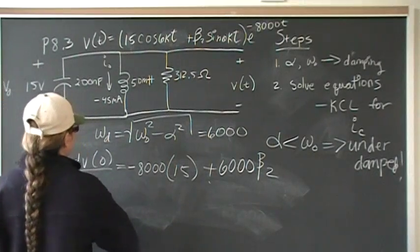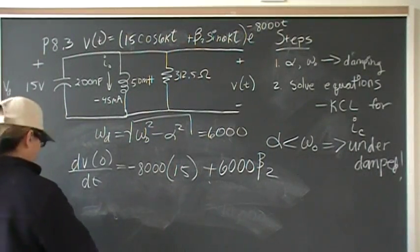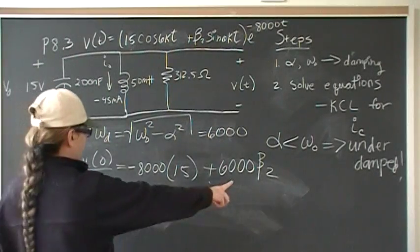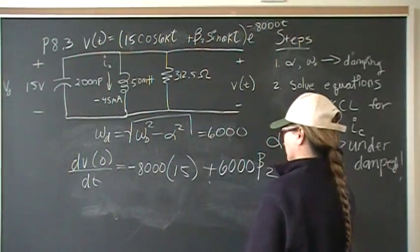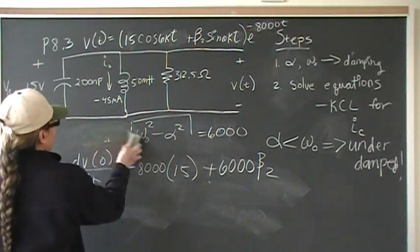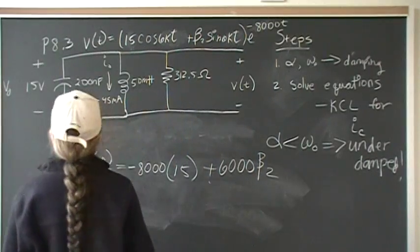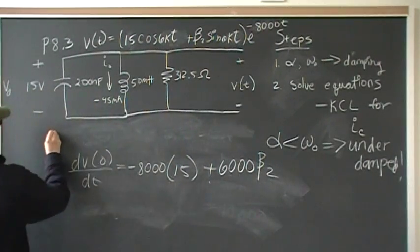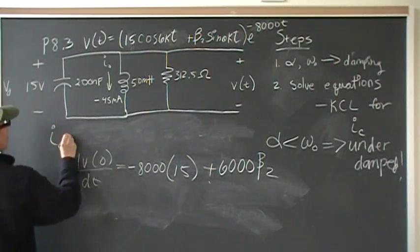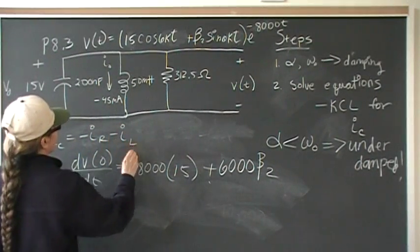Okay, so we have, I need to park this over here. So, I is equal to C dV/dt, so we know we need to find I_C. That's going to be negative I_R minus I_L.